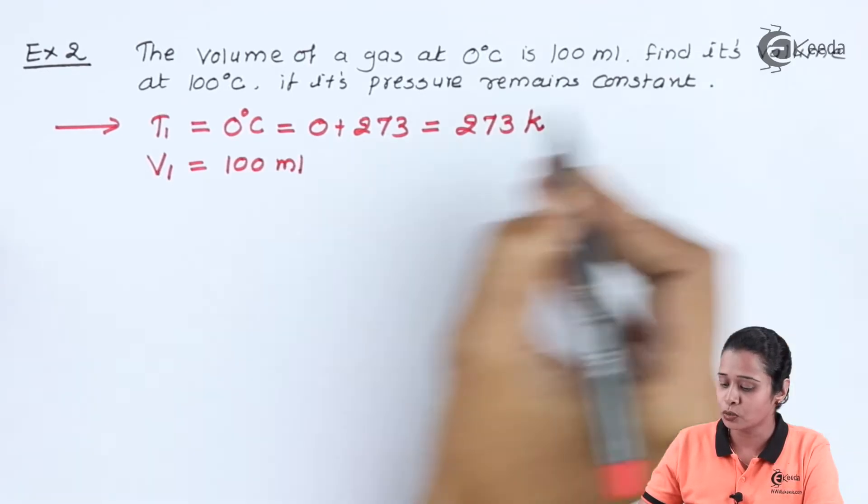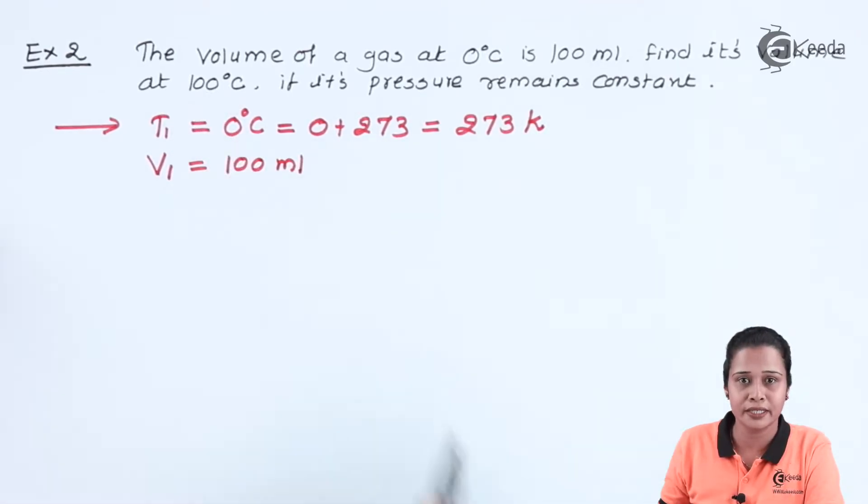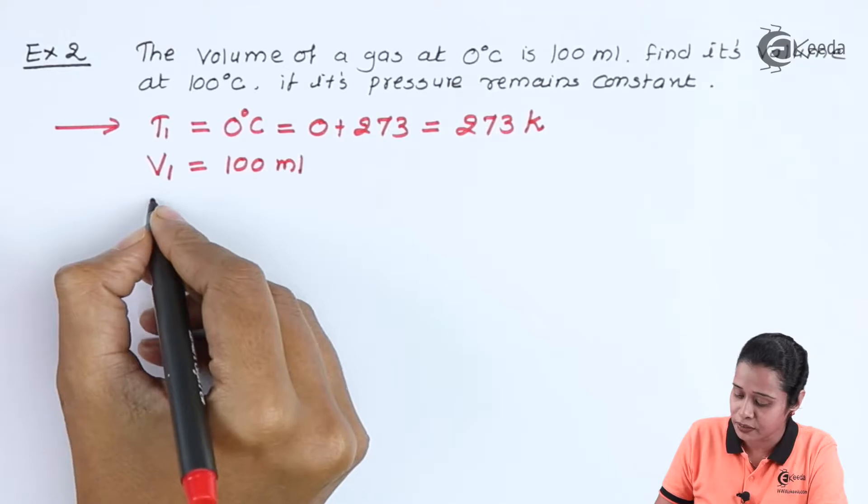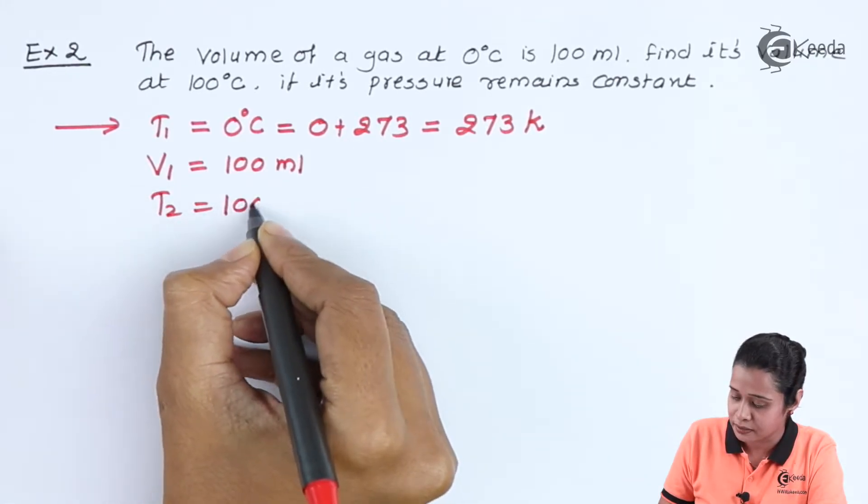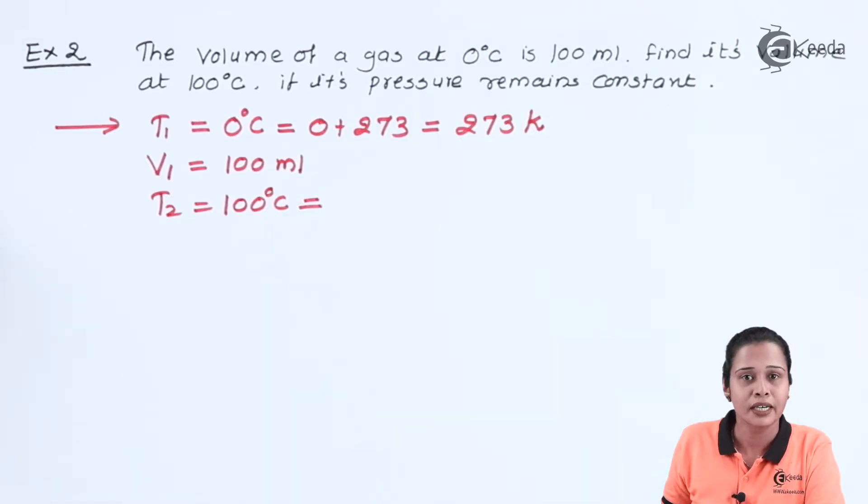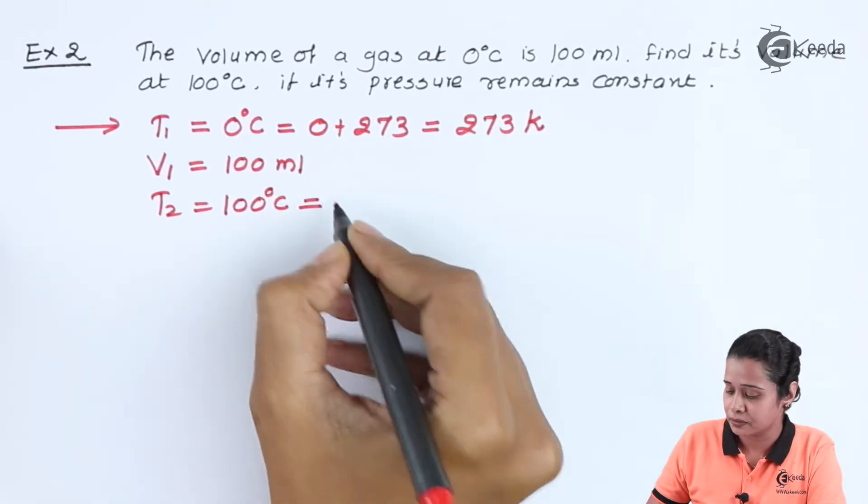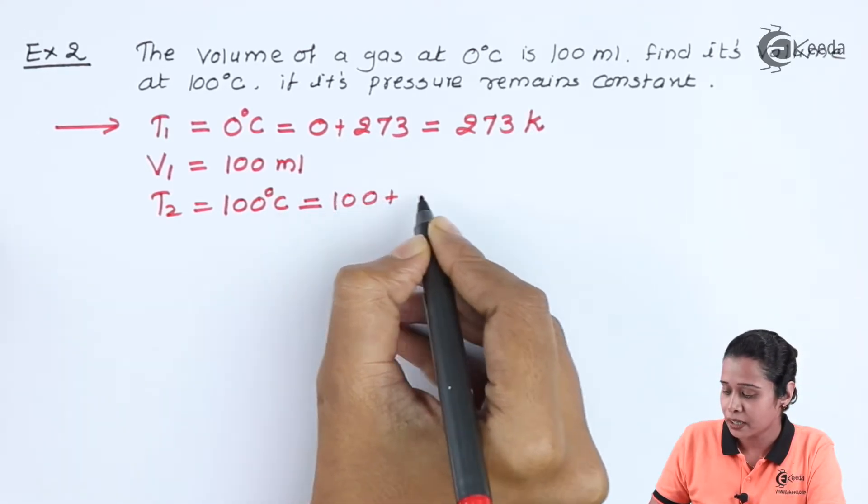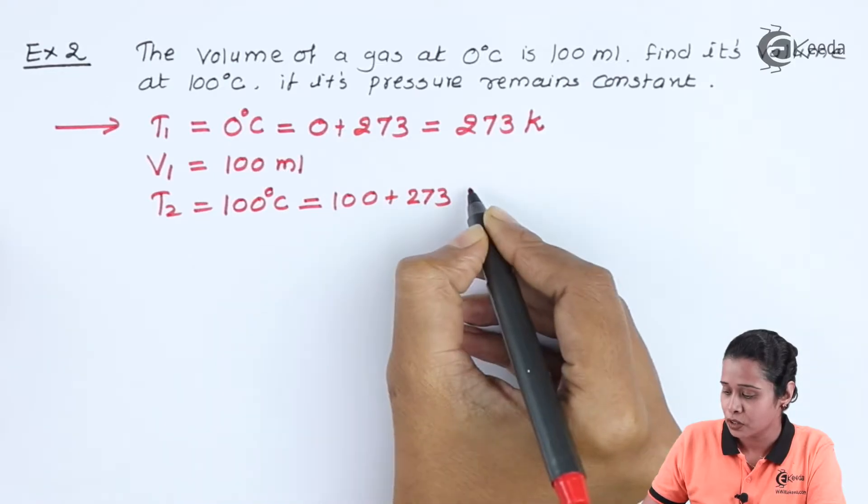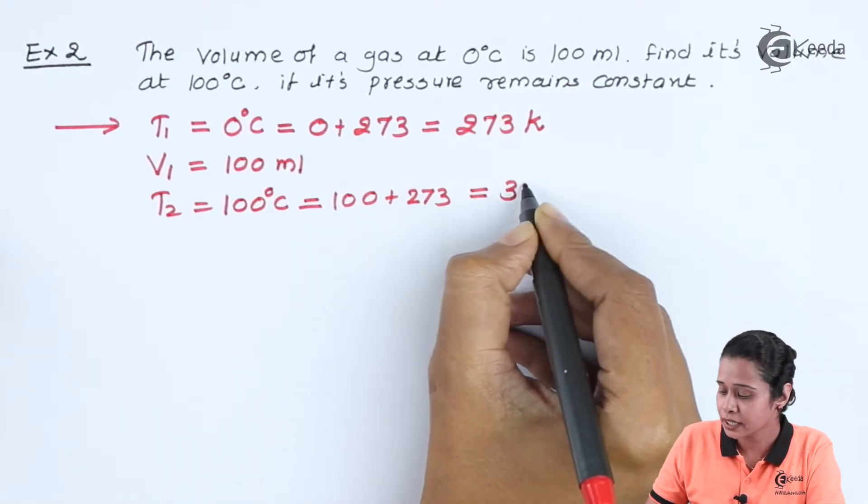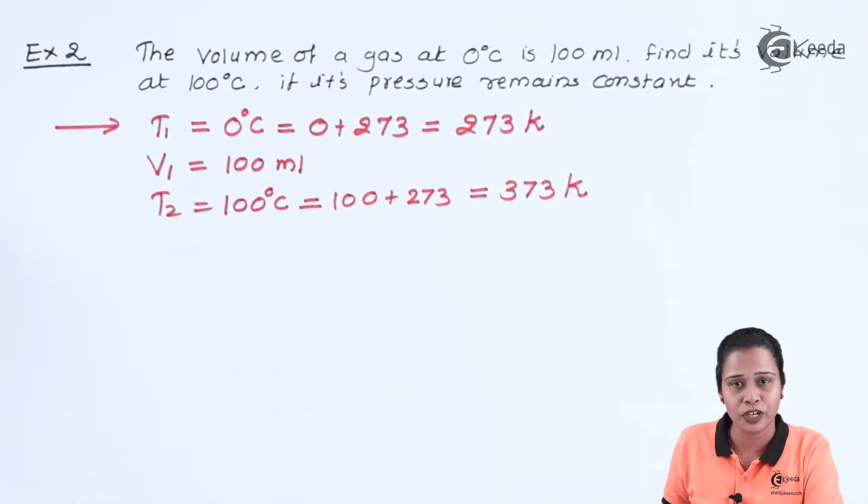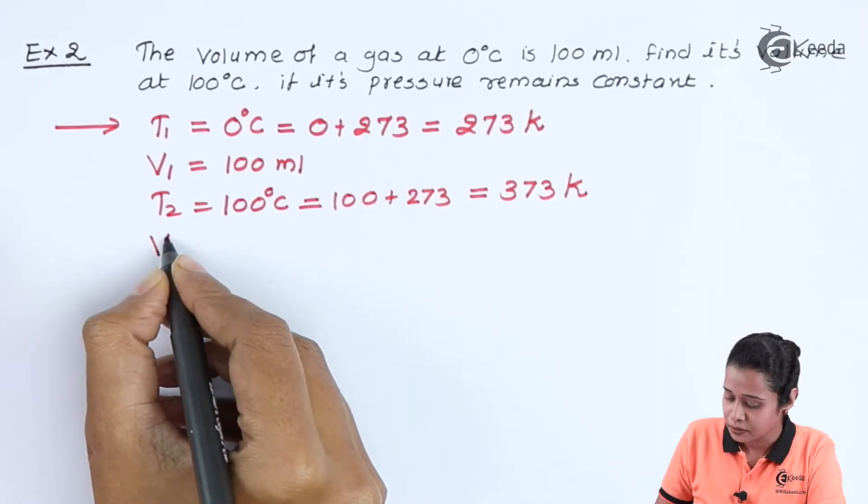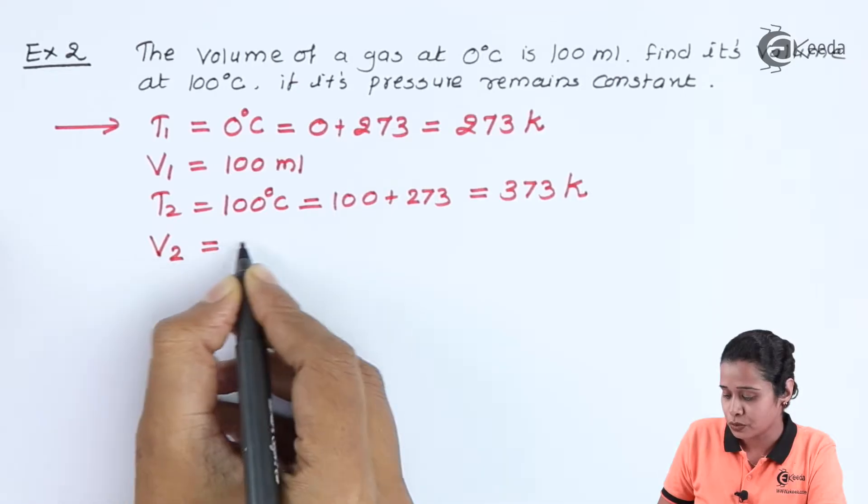Now, find the volume at 100 degree Celsius. T2 value is given that is 100 degree Celsius. Again, let us convert it into Kelvin: 100 plus 273, which is equal to 373 Kelvin. And here, we have to find out volume, V2.